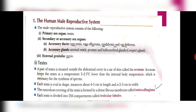Each testis has around 250 compartments called testicular lobules. Each testicular lobule has around 1 to 3 seminiferous tubules. The seminiferous tubules consist of two types of cells: the male germ cells called spermatogonia, and the sertoli cells. The spermatogonia undergo meiotic division to produce sperms, whereas the sertoli cells provide nutrition to the developing sperms. The region just outside the seminiferous tubules has Leydig cells or interstitial cells, which are responsible for the production of an androgen called testosterone.